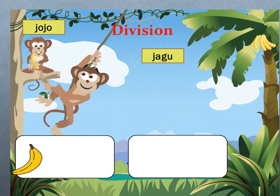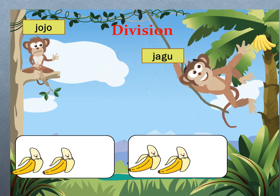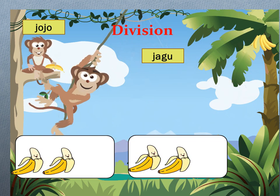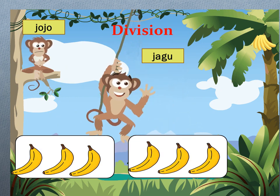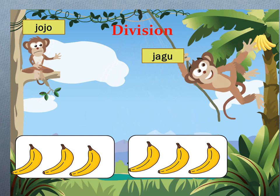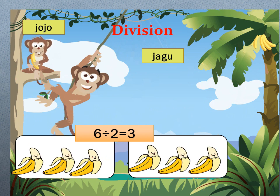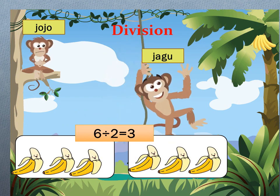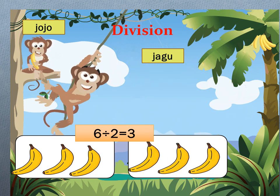Let's start distributing. One banana to Jojo and one to Jagu, one more to Jojo, and one more to Jagu — until all six bananas are distributed equally between the two monkeys. You have a total of six bananas divided between two monkeys, and each monkey gets three bananas. Jojo has three bananas and Jagu has three bananas.